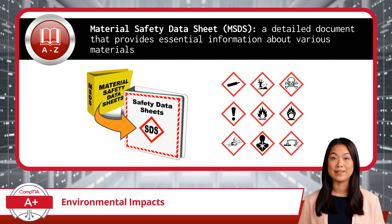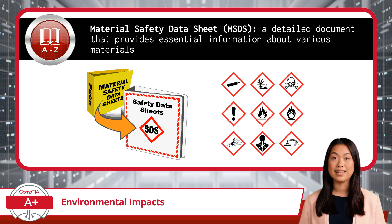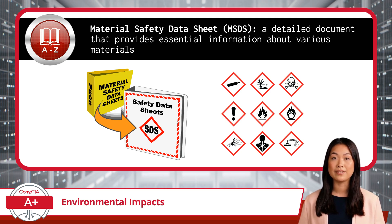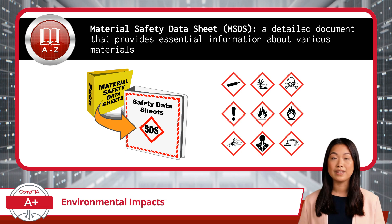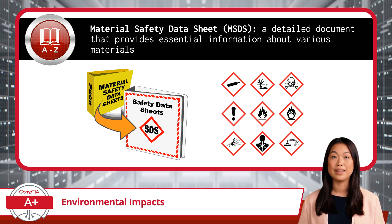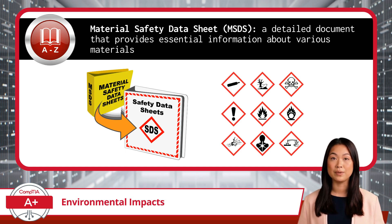So let's start with the basics: how we handle and dispose of the tools and materials that power our technology. Many items, like batteries and toner cartridges, or older equipment like CRT monitors, can't just be tossed into the trash — they require special disposal methods. That's where material safety data sheets come in. Think of a material safety data sheet as the ultimate cheat sheet for handling potentially hazardous materials. An MSDS is a detailed document that provides essential information about the properties of a material, its potential hazards, safe handling and storage requirements, as well as disposal practices. It even includes guidance on dealing with fire risks, explosion dangers, and first aid measures. Whether you're figuring out how to recycle a laptop battery or dispose of an old CRT monitor, an MSDS ensures you're doing it safely and responsibly.